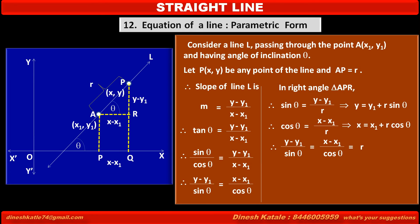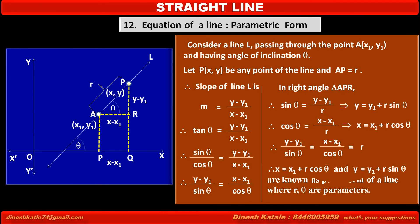Therefore we can write: (y minus y1) upon sin theta equals (x minus x1) upon cos theta equals r. Hence x equals x1 plus r·cos theta and y equals y1 plus r·sin theta are known as the polar form of a line, where r and theta are the parameters.